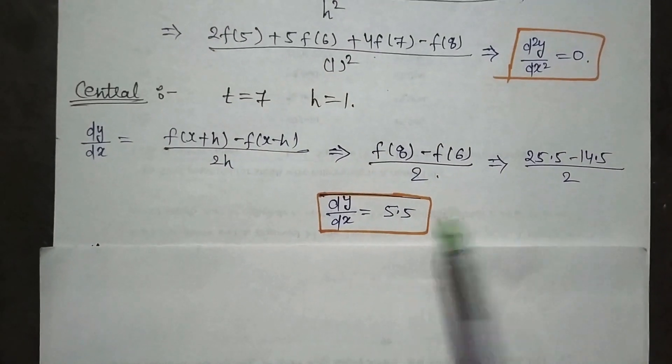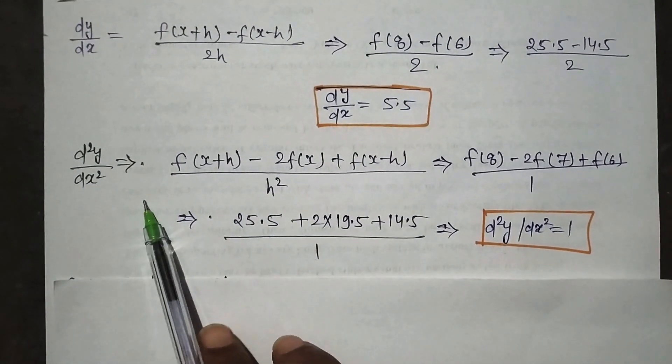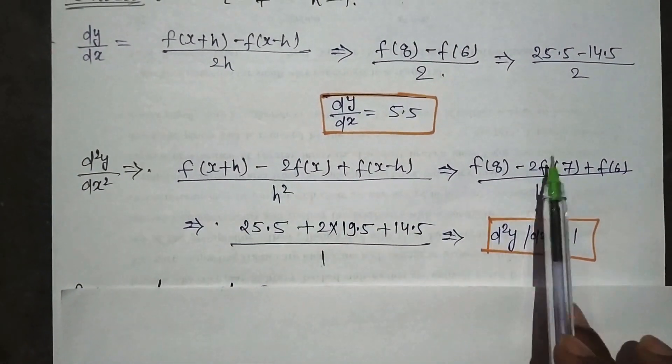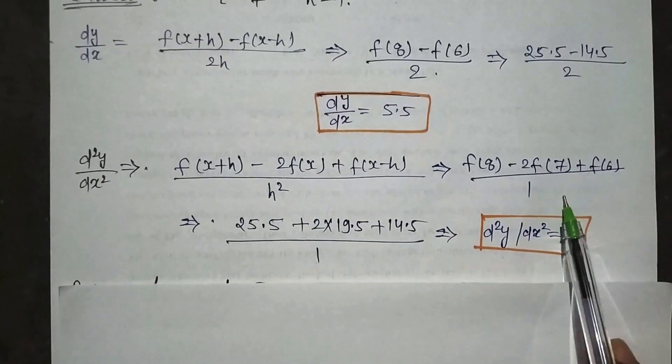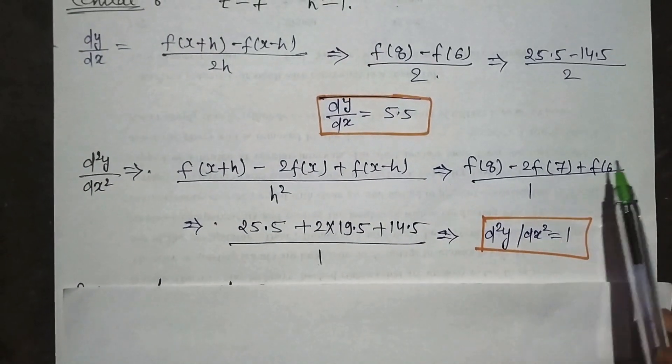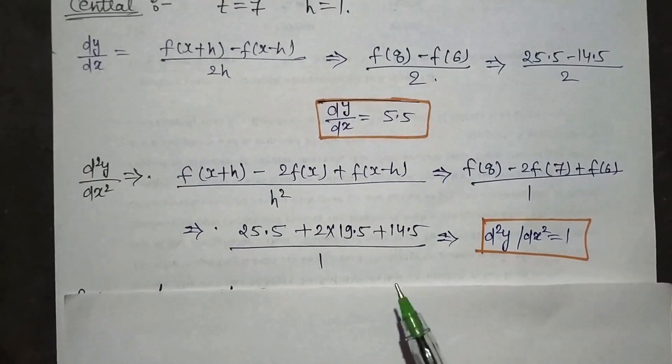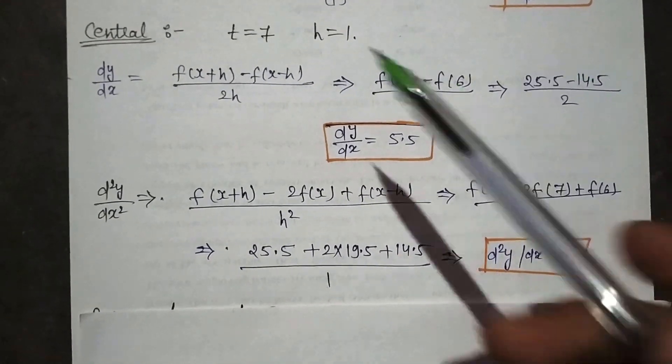This is for the second derivative, it means acceleration. This is the formula and we will put in place of x 7, in place of h 1. Similarly solve it. Similarly f8, f7, f6 values we will take from the table which is given to us in the question and solve it out. You will get the answer. So this is for the central.